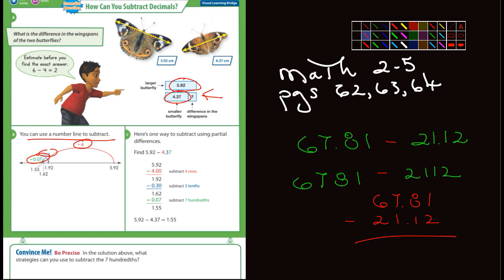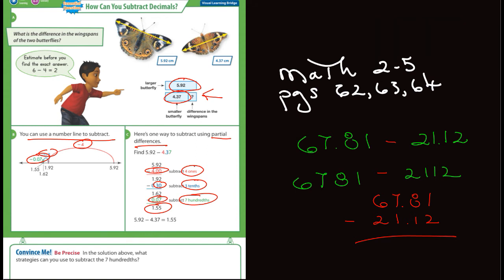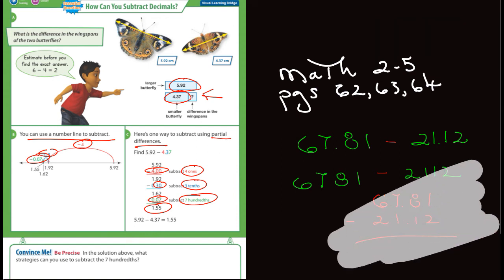That's one way you could look at doing it. Another way is to subtract using partial differences. It's kind of the same thing but not on the number line. First you subtract the four ones, then you subtract the three tenths, and finally the seven hundredths, and you end up with 1.55.